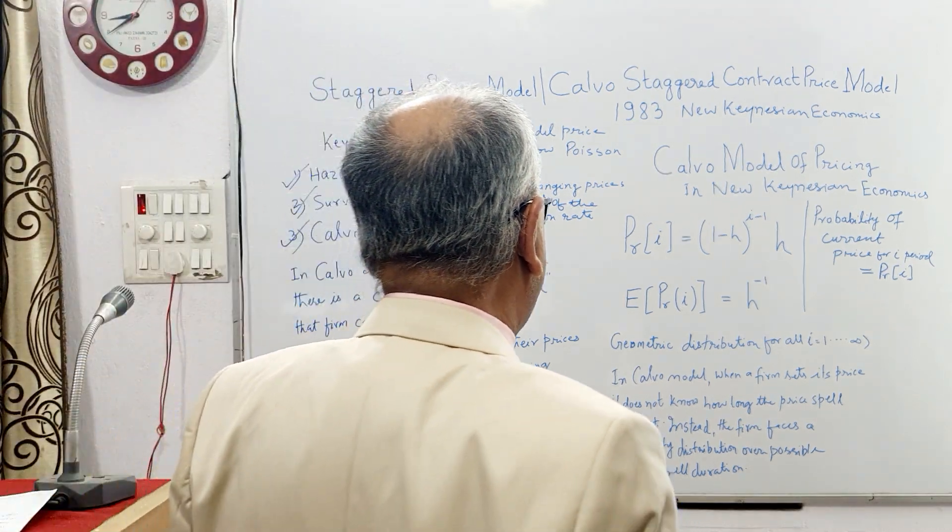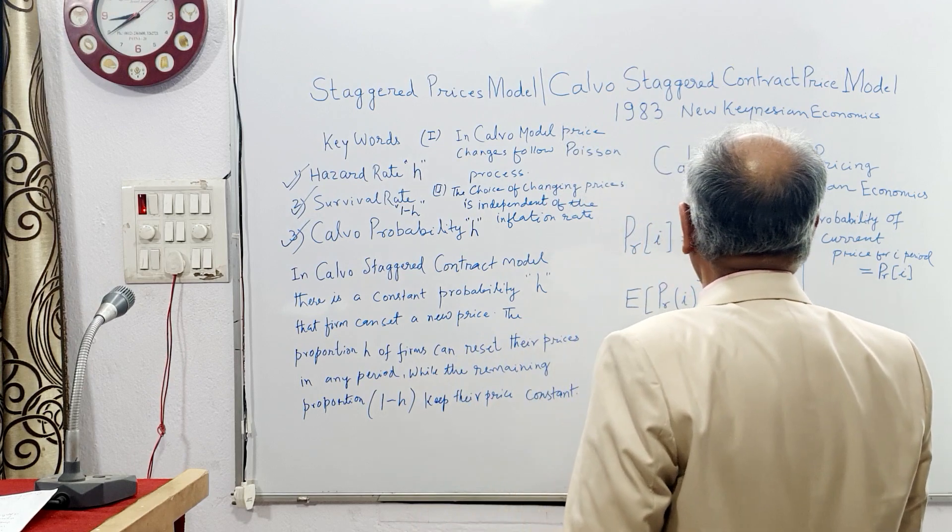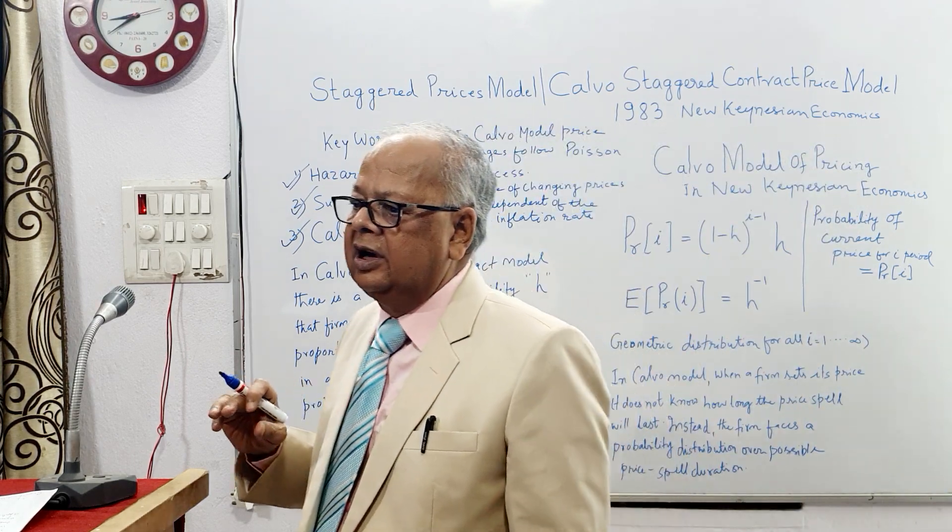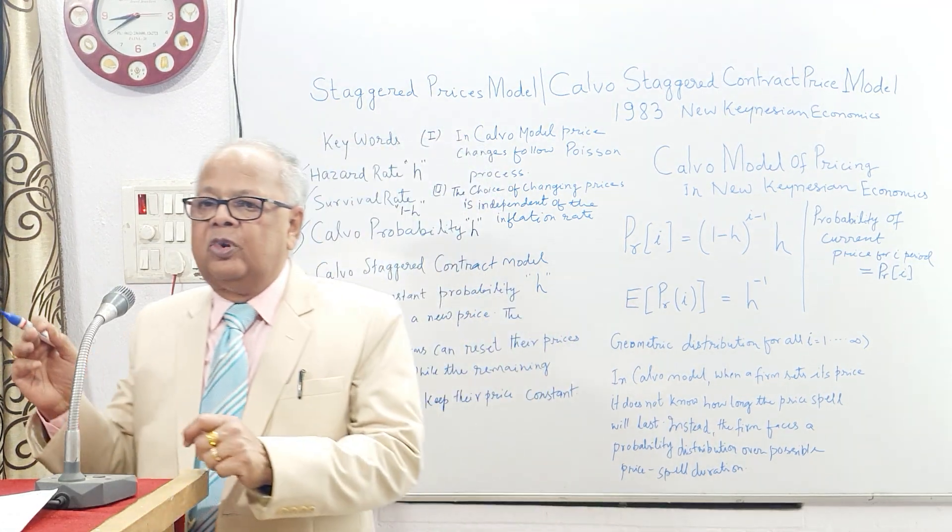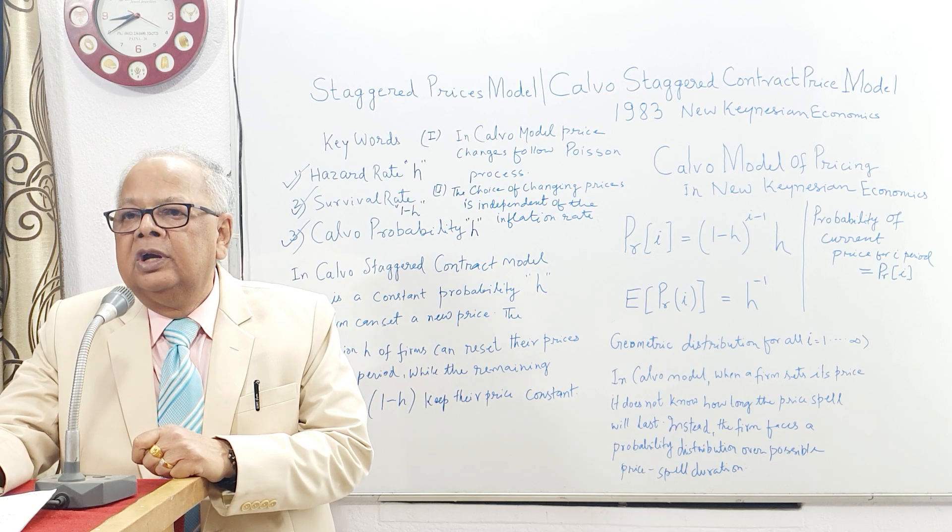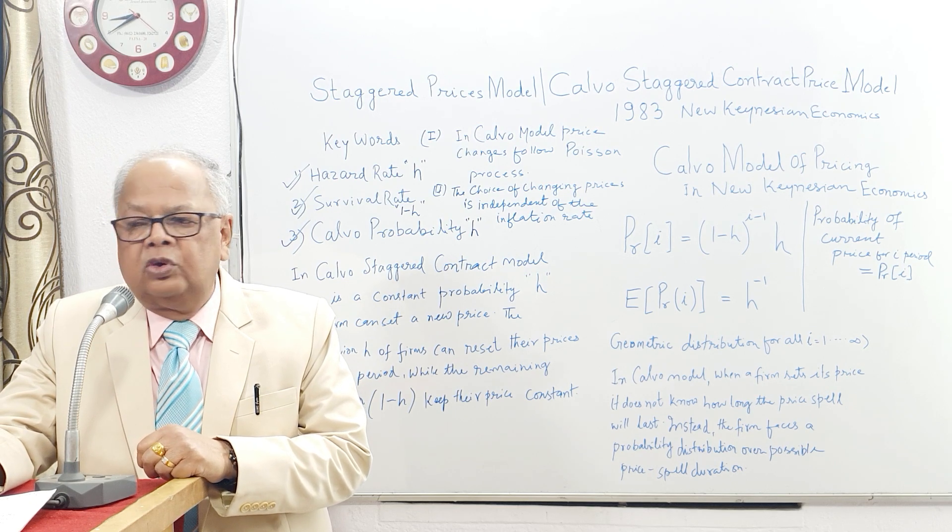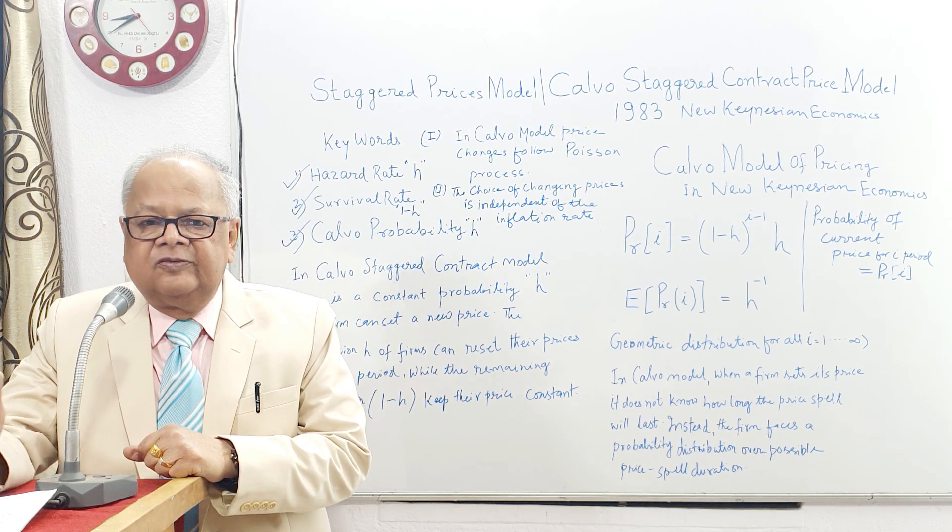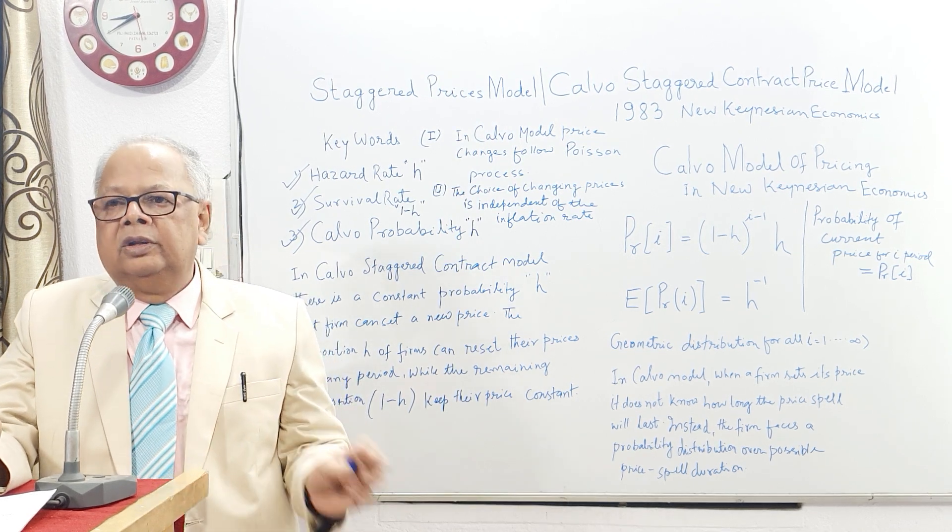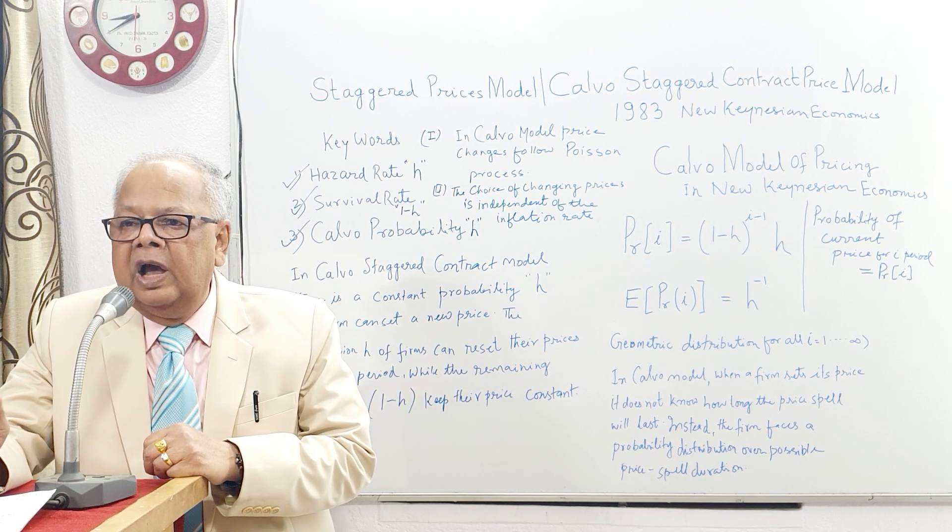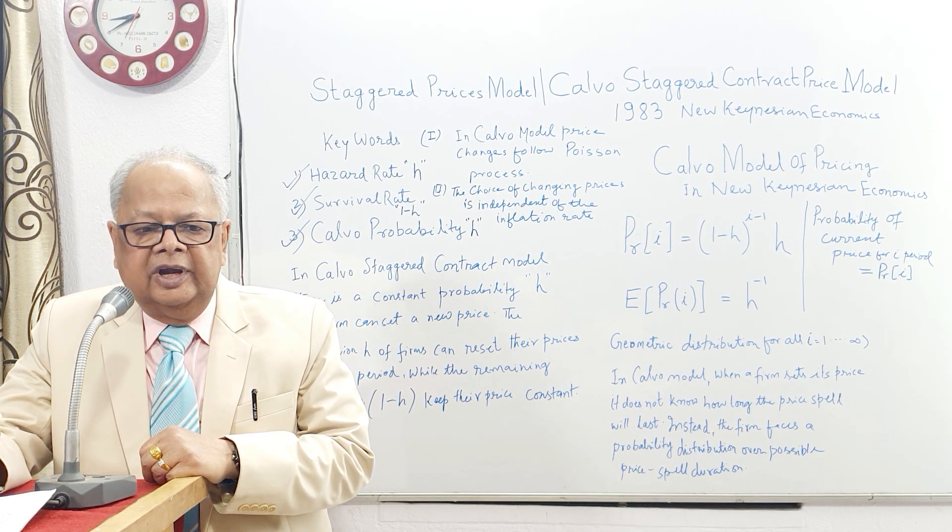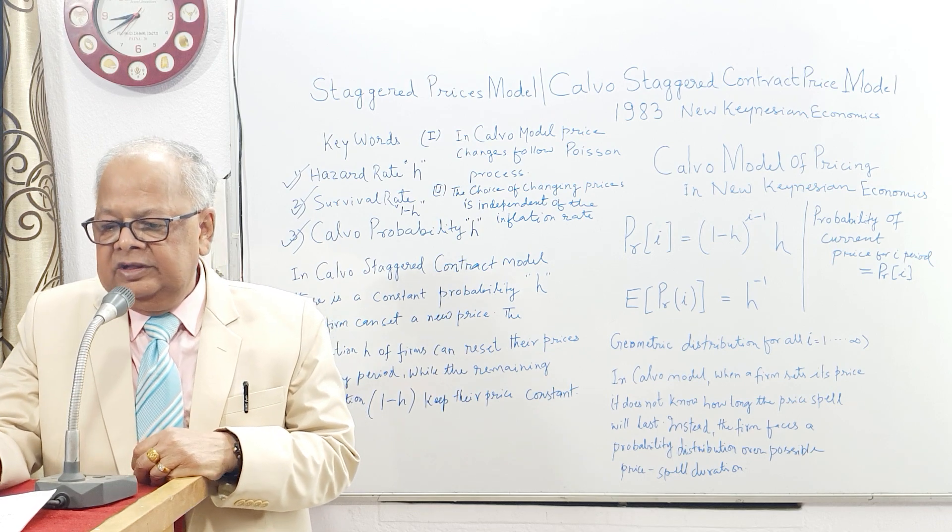Thus, we conclude that in New Keynesian economics, Calvo's staggered contract model and staggered prices model play an important role, especially when there is a dynamic stochastic general equilibrium analysis. If there is a shift from equilibrium to disequilibrium, then how it will approach back to equilibrium depends upon all these facts. That's all, thank you.